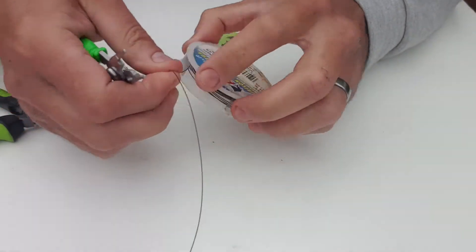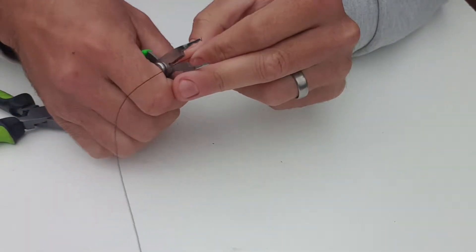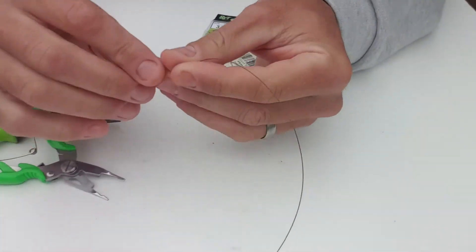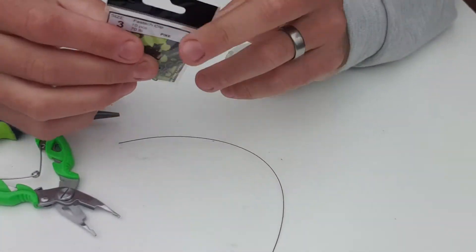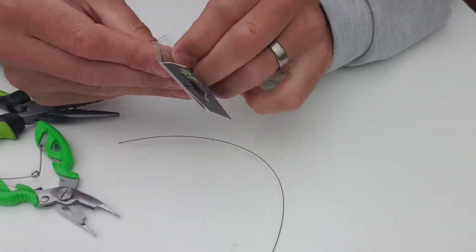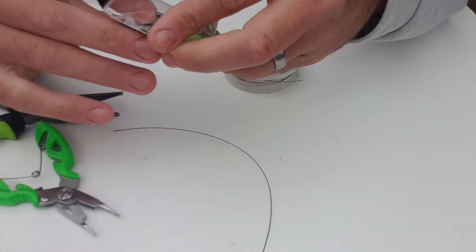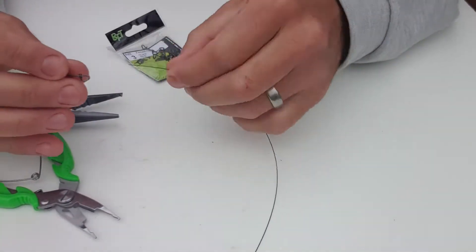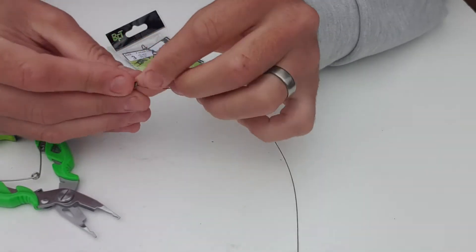I'll cut it off roughly the length I want. This is the 26 pound AFW I'm using. Just get one of these fastach snaps out. This is the number three which I normally use for my bigger pike stuff.